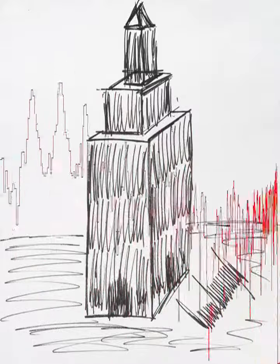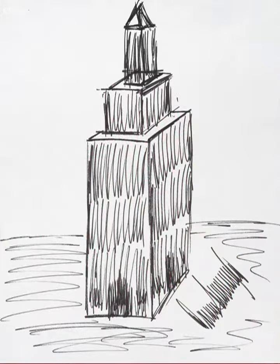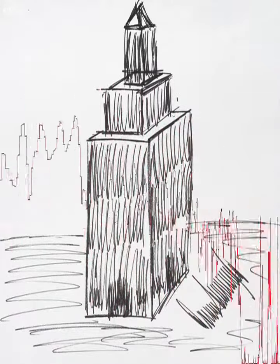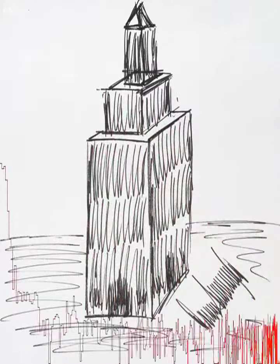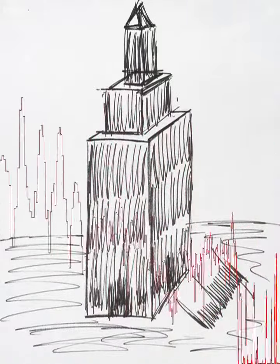This image provided by Julian's Auctions shows a sketch of the Empire State Building drawn by President Donald Trump that sold for $16,000 at auction on October 19, 2017.